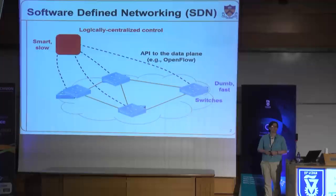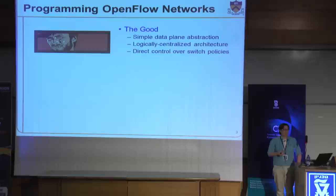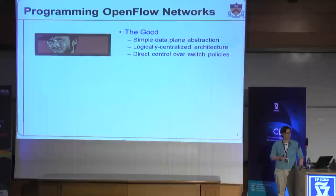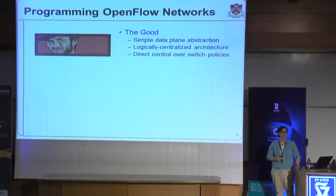That's exactly what we're trying to do in Frenetic. Part of the challenge of programming these kinds of networks — one thing that does help a lot is you have a very simple abstraction of the data plane, a centralized architecture which makes it easier to reason about network-wide visibility and control, and you have direct control over the underlying switches rather than the sort of indirect baroque mechanisms that today's control planes offer.